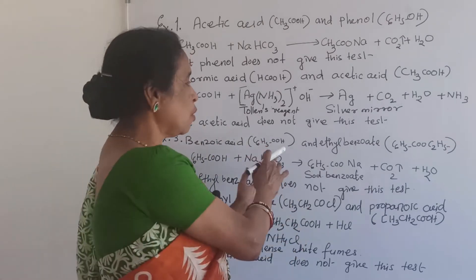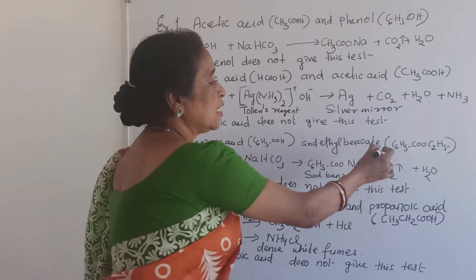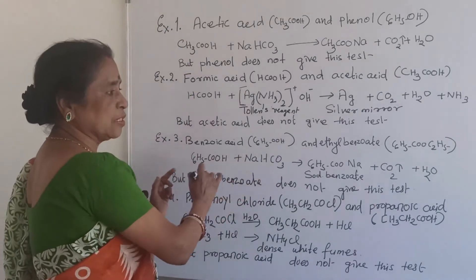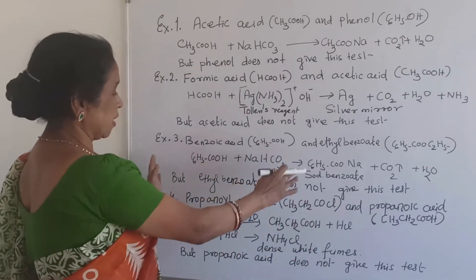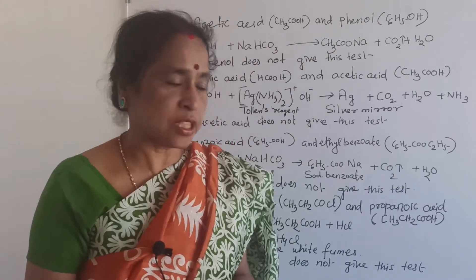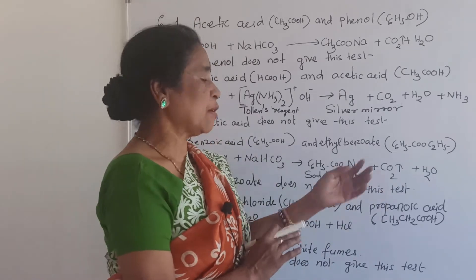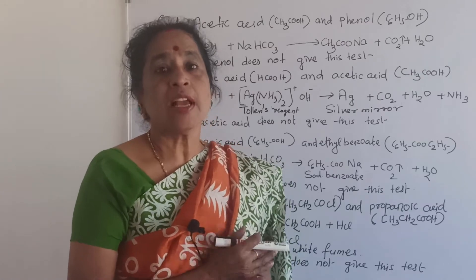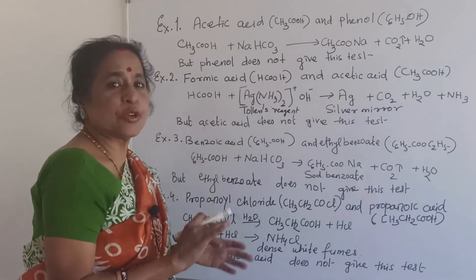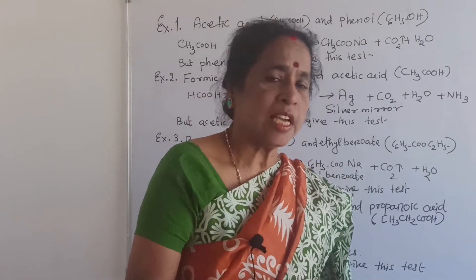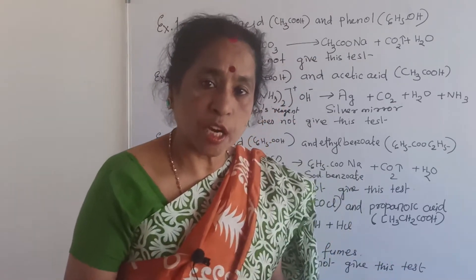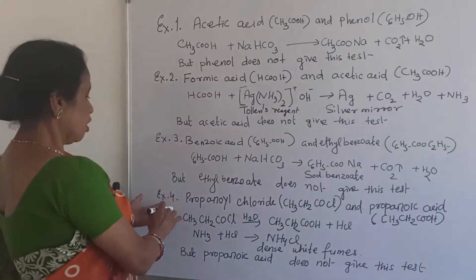Example 3: Benzoic acid (C6H5COOH) and ethyl benzoate (C6H5COOC2H5). Benzoic acid is an acid, so it reacts with sodium hydrogen carbonate to give sodium benzoate and carbon dioxide — effervescence takes place. But when you add sodium hydrogen carbonate to ethyl benzoate, there is no reaction — no reaction takes place.